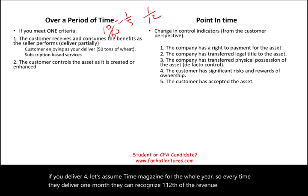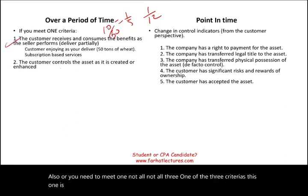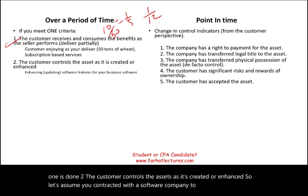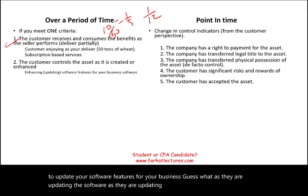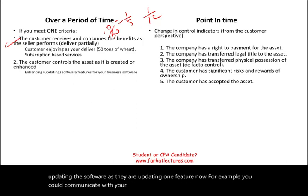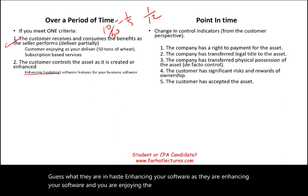You only need to meet one of the three criteria, not all three. Second criteria: the customer controls the asset as it's created or enhanced. If you contracted a software company to update your software features, as they update one feature — say, electronic communication with suppliers or a customer messenger — and you are already using it, they can recognize revenue over a period of time.